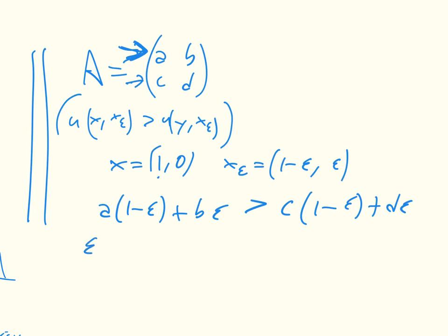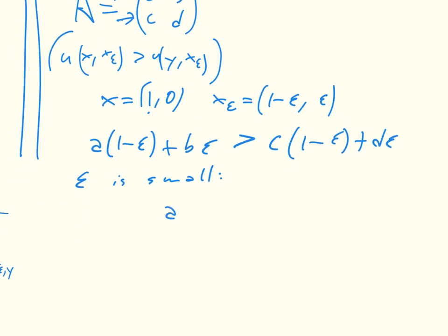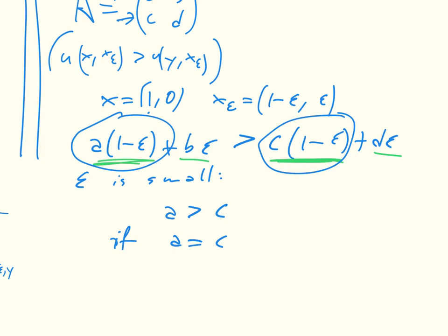Now if epsilon is small, we know that this corresponds to a greater than c. If epsilon is small, this disappears, this disappears, the main factors we have here is that, but if a is equal to c, then we do need, so this and this then cancel out, we do then need that b has got to be greater than d.